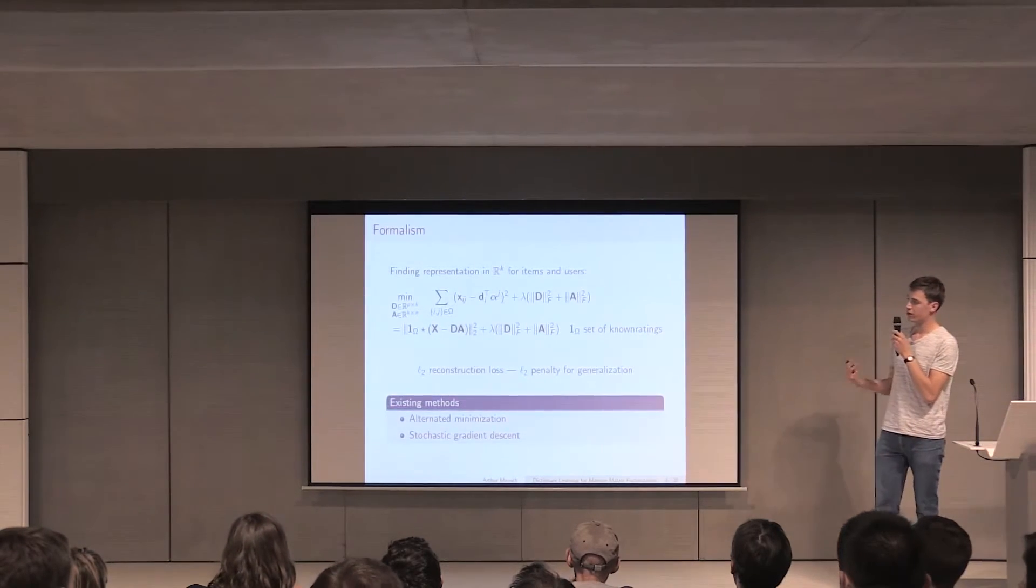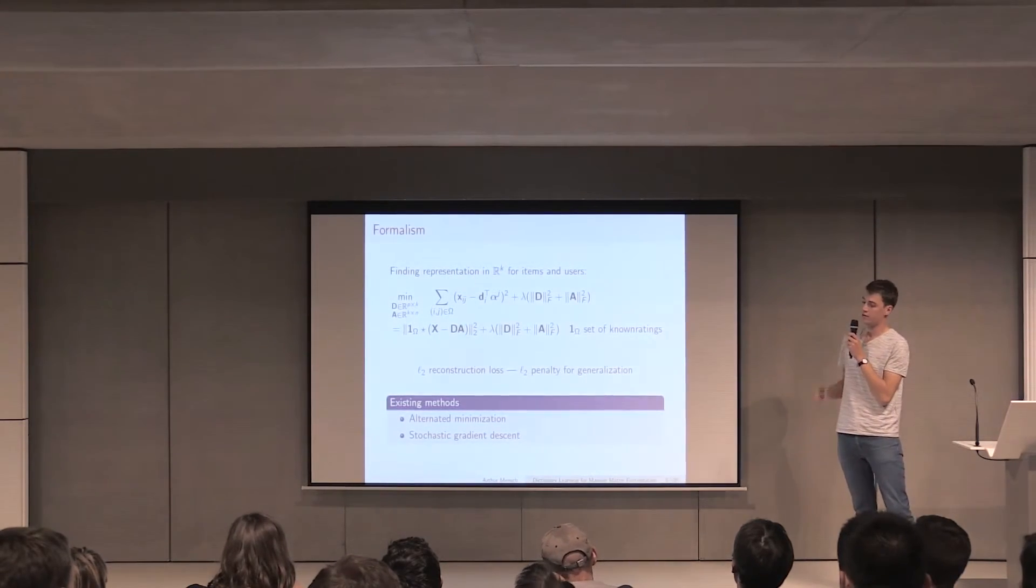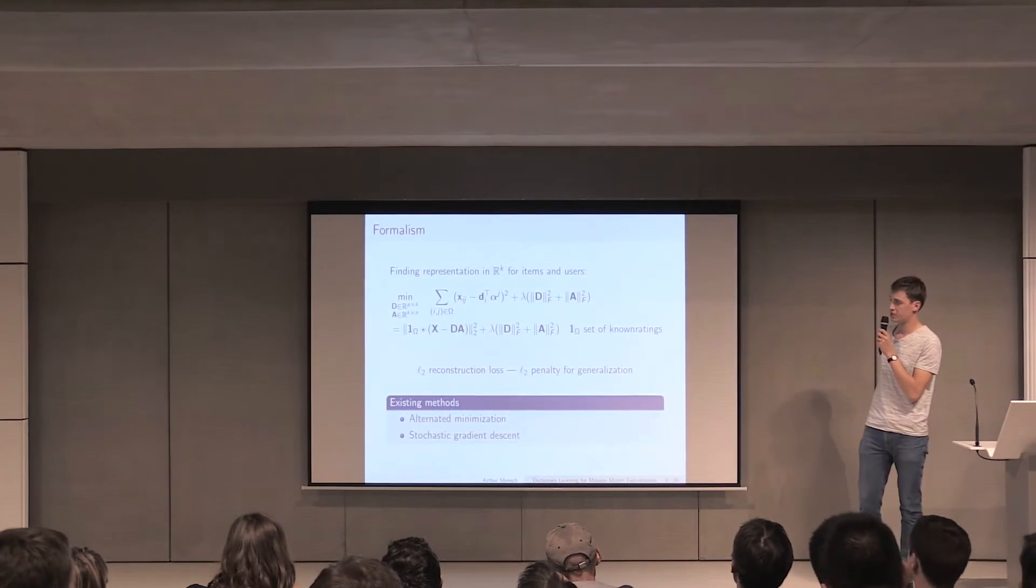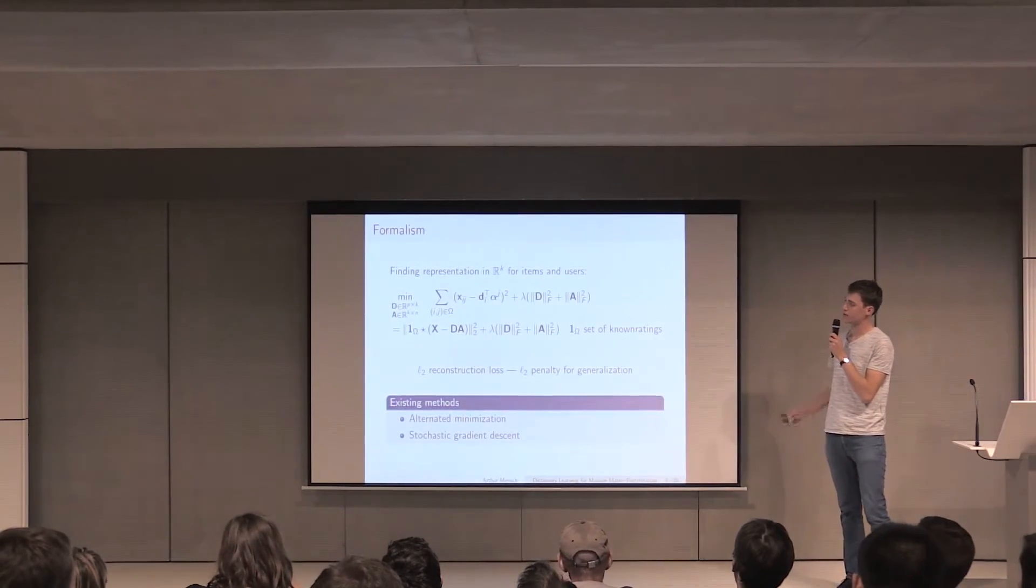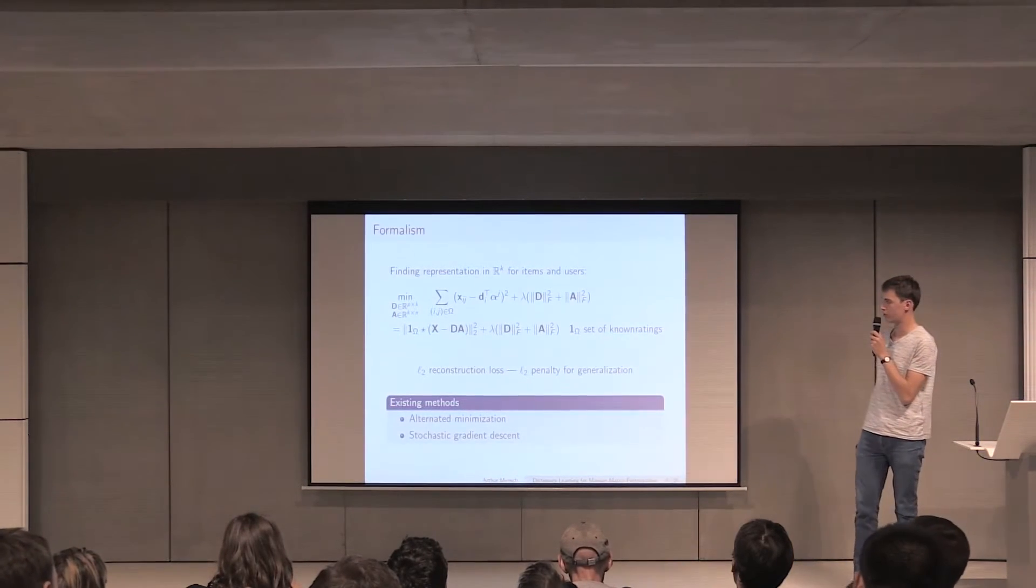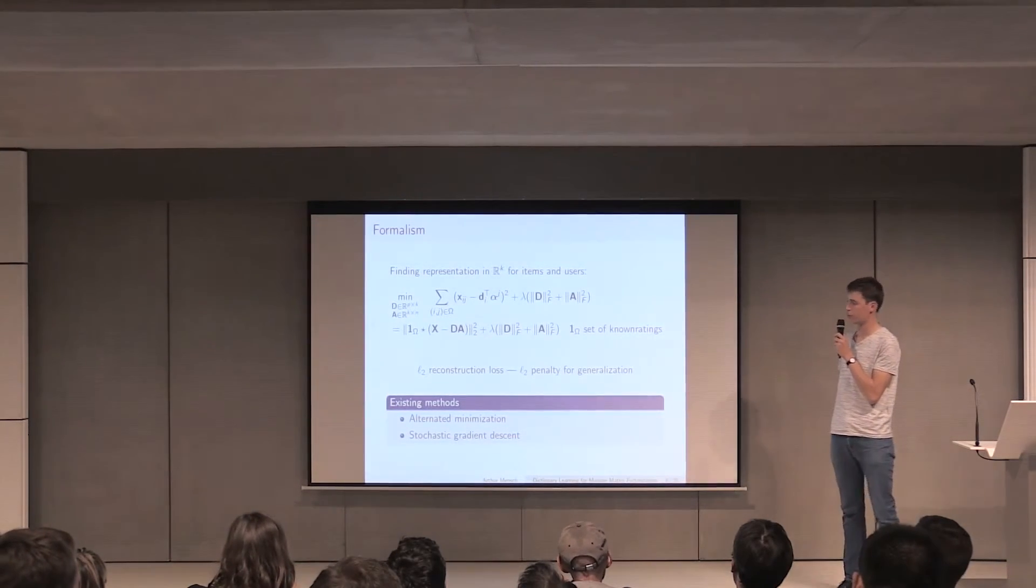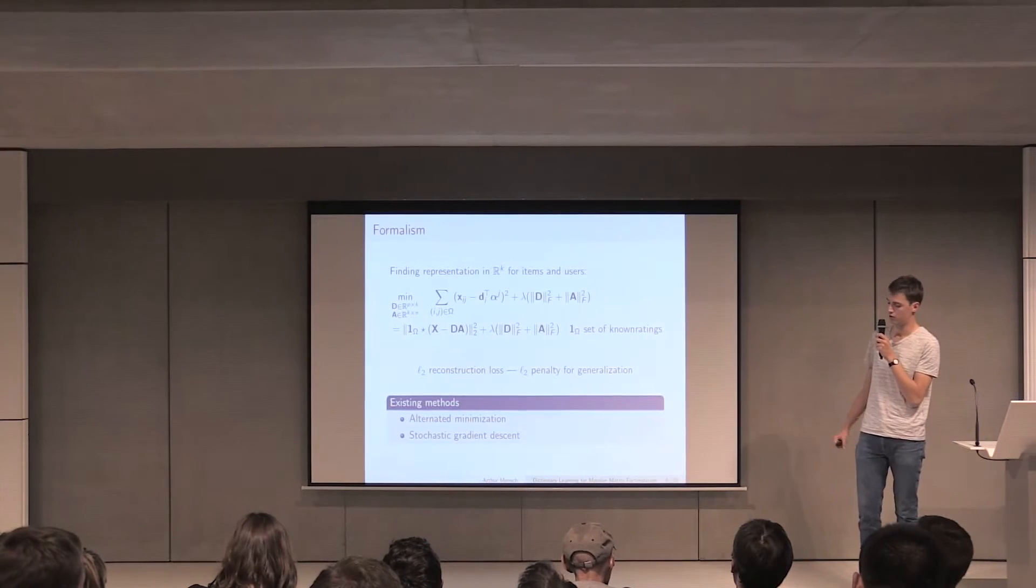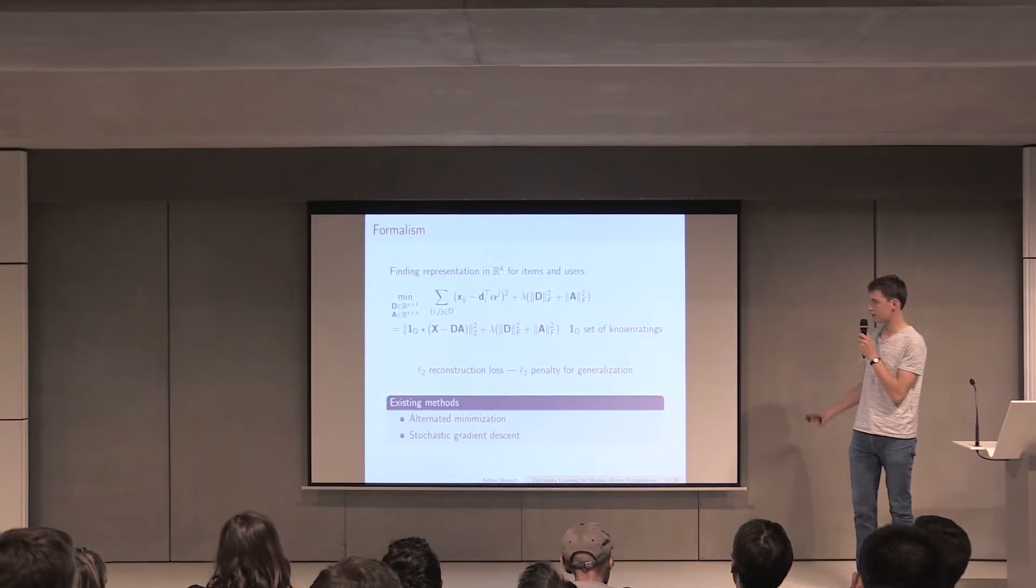The formalism we can introduce to perform this matrix factorization is, as in many machine learning problems, the minimization of an objective function. You want to minimize the L2 reconstruction loss, which is the difference between the true ratings and the prediction given by the scalar products. And you add some L2 penalty, typically, to regularize your problem and to prevent overfitting in order to be able to predict unseen ratings.